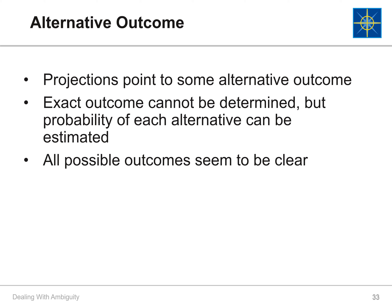Level two is about the alternative outcome. Organizations can describe the future based on a few alternative outcomes. Though the exact outcome cannot be determined, the probability of each alternative happening can be easily estimated. All the possible outcomes are visible, but what will happen in the future cannot be predicted.